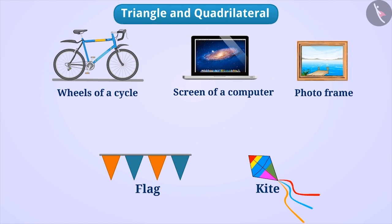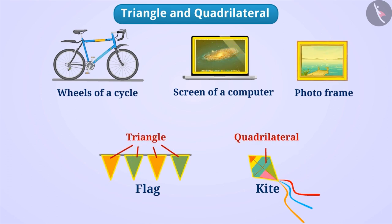With the help of the understanding of geometry, we can represent these objects into different shapes such as triangles, quadrilaterals, circles, etc. So let's understand these shapes a little bit more.